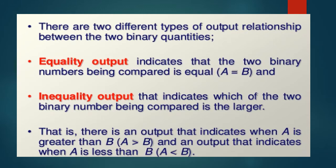When we compare two binary numbers, there is some relationship between the two binary quantities: equality output and inequality output. First, the equality output indicates the two binary numbers being compared is equal if A is equal to B. The inequality output indicates which of the two binary numbers being compared is the larger. There is an output that indicates when A is greater than B and an output that indicates when A is less than B.